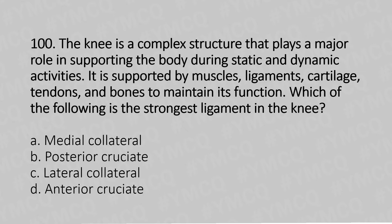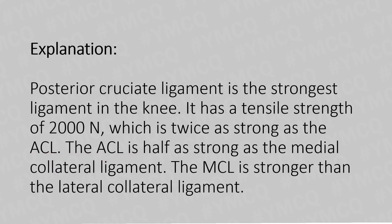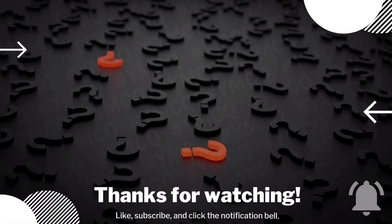Which of the following is the strongest ligament in the knee? Option A: medial collateral ligament. Option B: posterior cruciate ligament. Option C: lateral collateral ligament. Option D: anterior cruciate ligament. The answer is Option B — the posterior cruciate ligament. The PCL is the strongest ligament in the knee, with a tensile strength of 2000 newtons, which is twice as strong as the ACL. The ACL is half as strong as the MCL, and the MCL is stronger than the lateral collateral ligament.